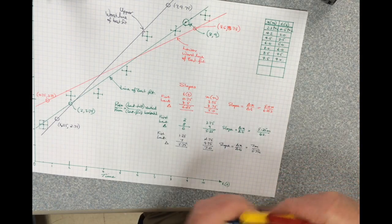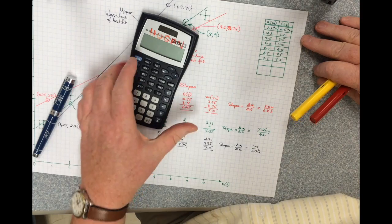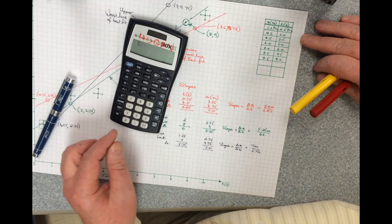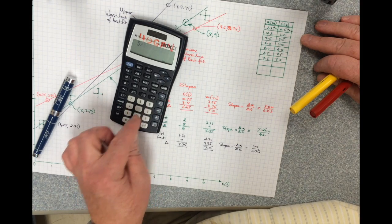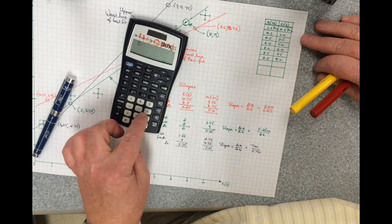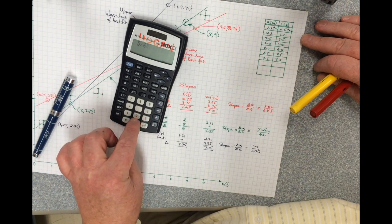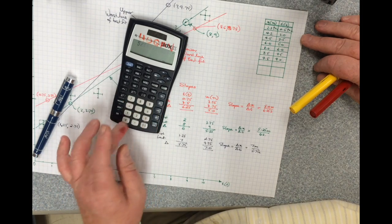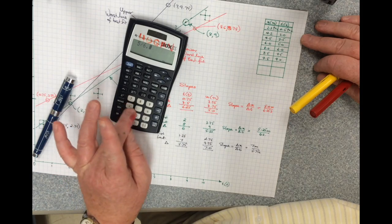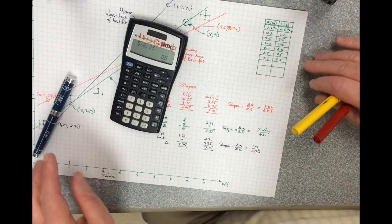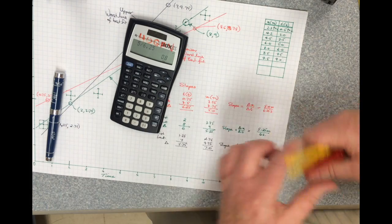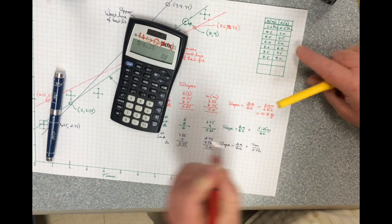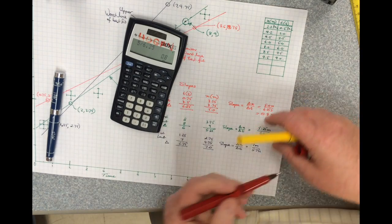Now I'm going to quickly do a calculation for this. We've got 6.5 divided by 6.25, which is 0.8. So this is 0.8 meters per second. That's what the slope is. It's the speed because it's a distance divided by a time.